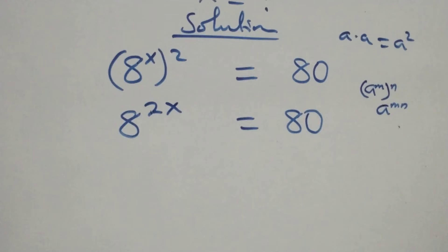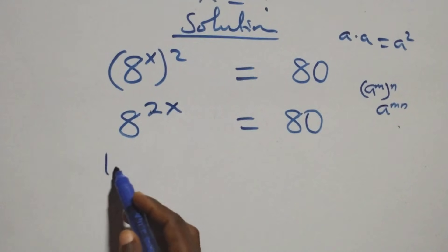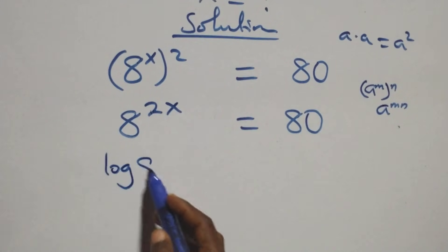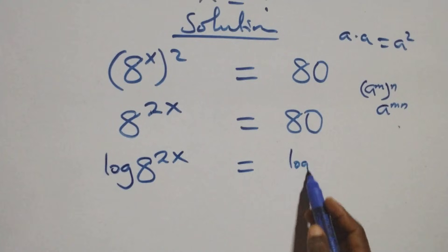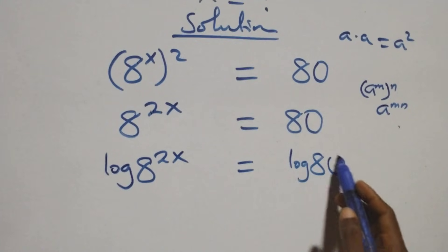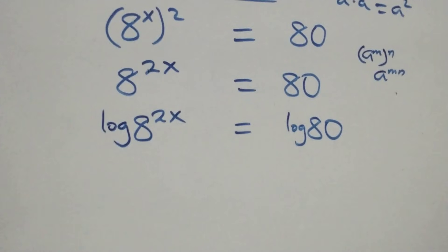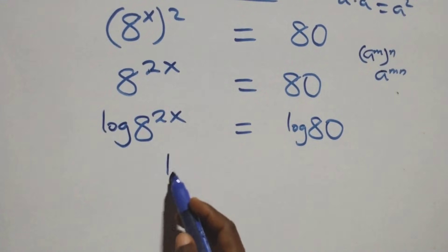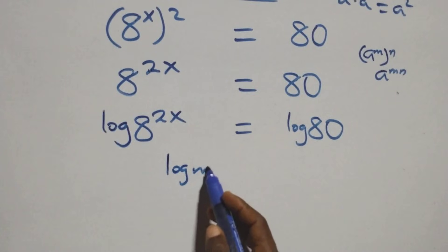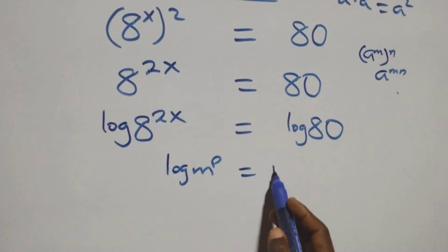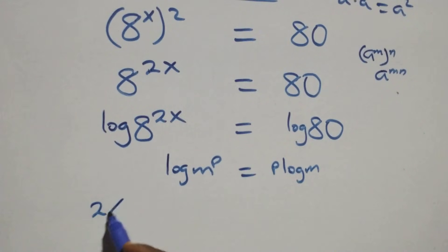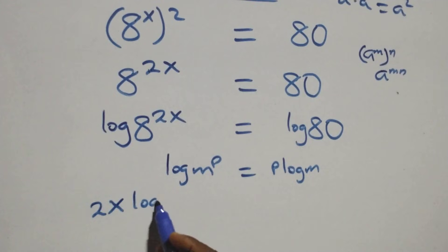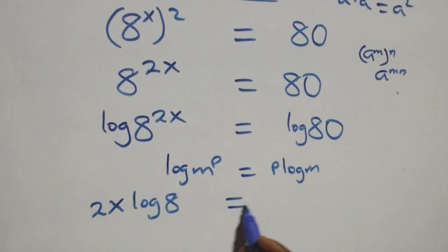The next step here: take the log on both sides. We have log 8 raised to power 2x equals log 80 on this side. We apply the power rule of logarithms: log m raised to power p is the same thing as p log m. And so we have 2x log 8 equals log 80 from here.